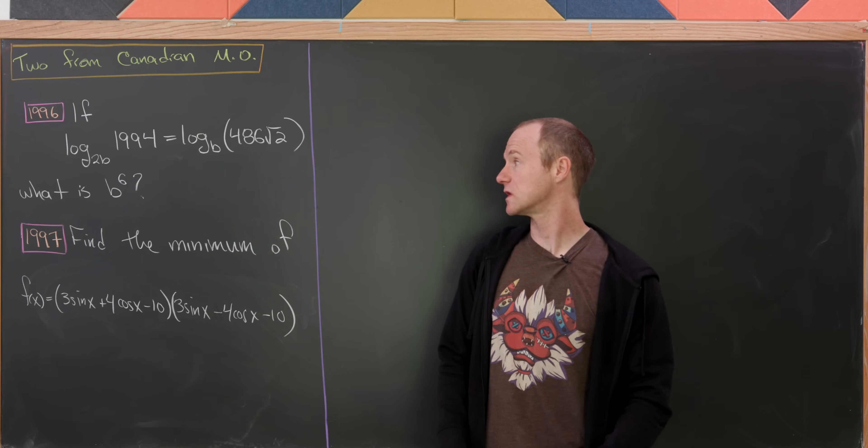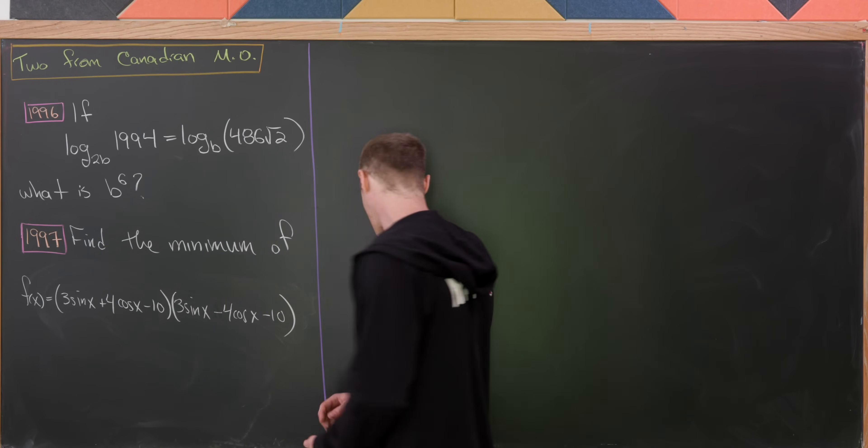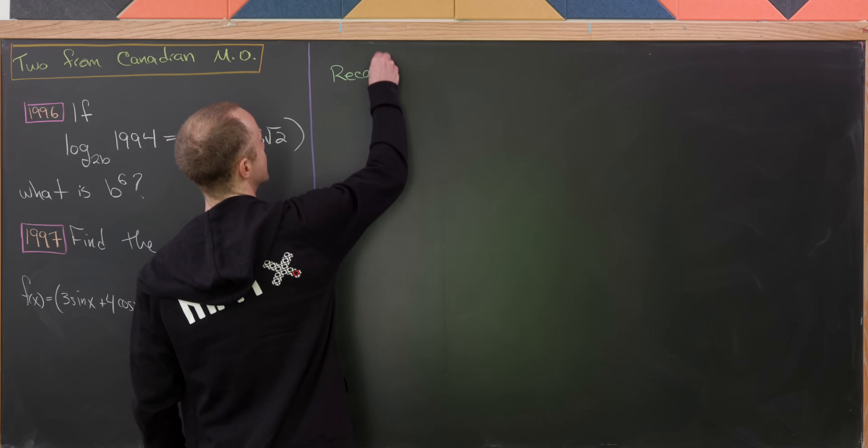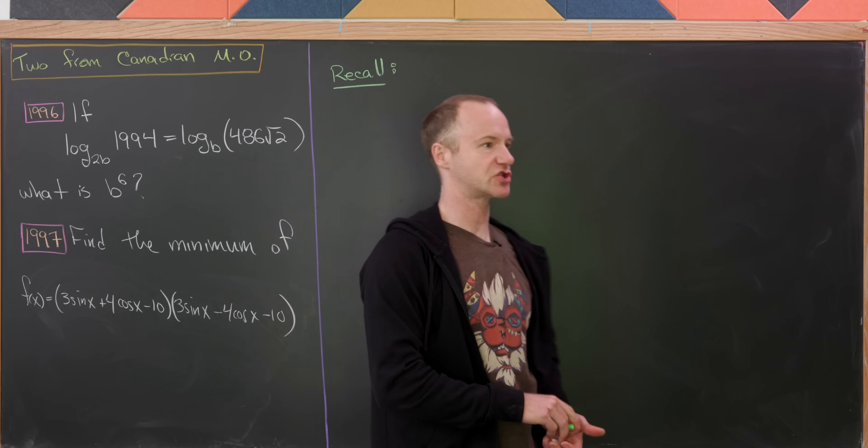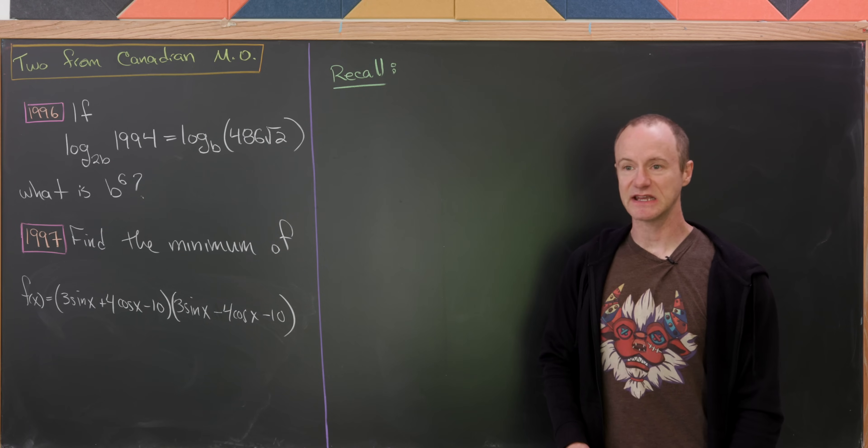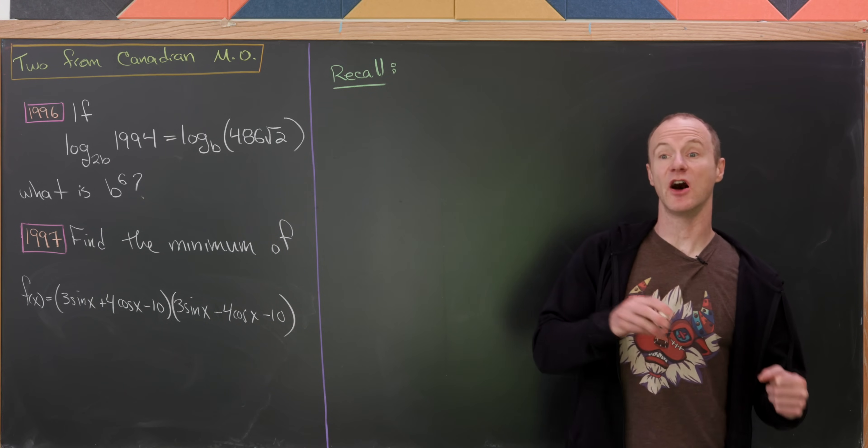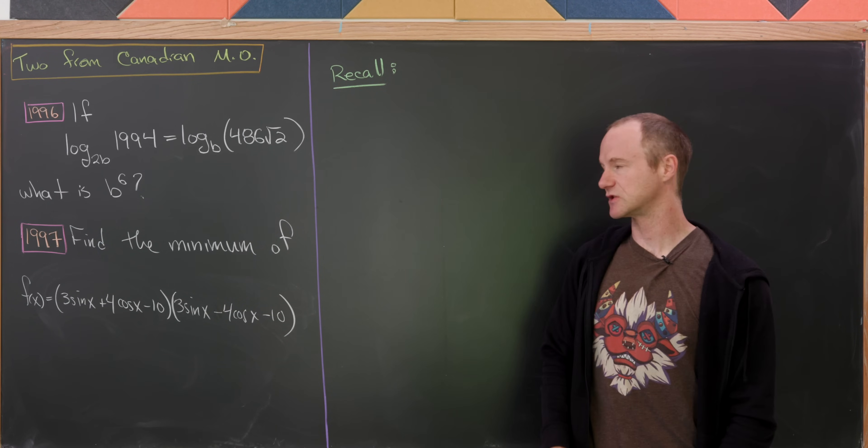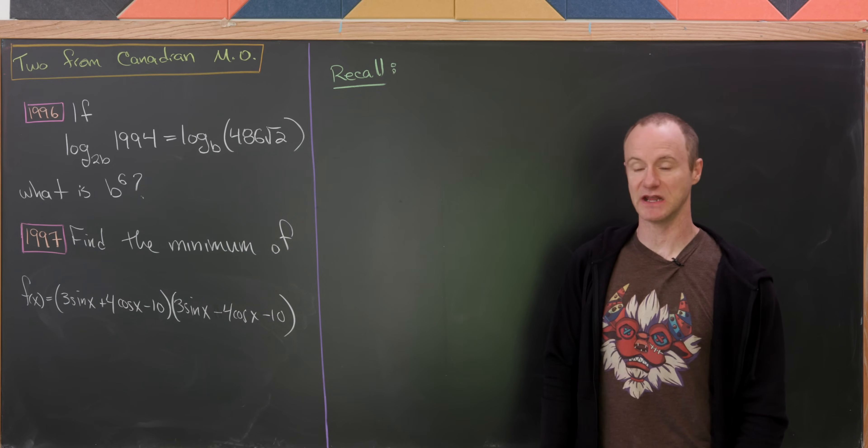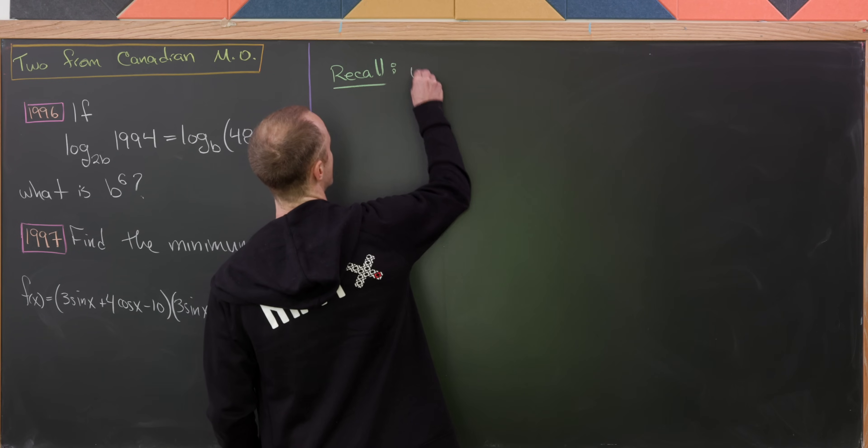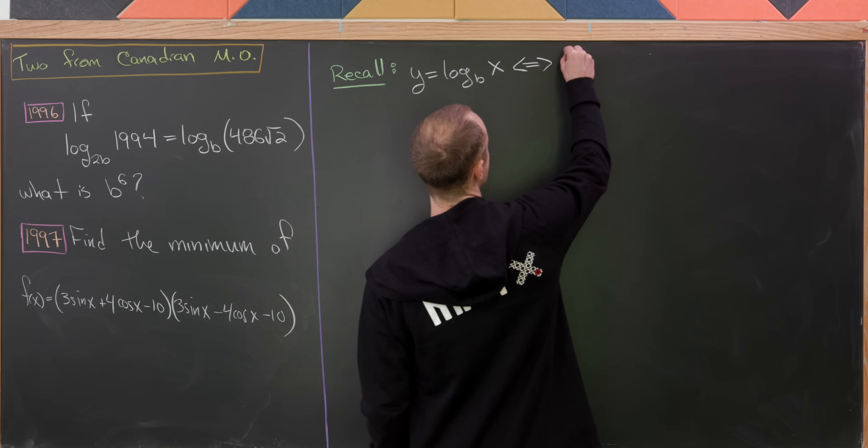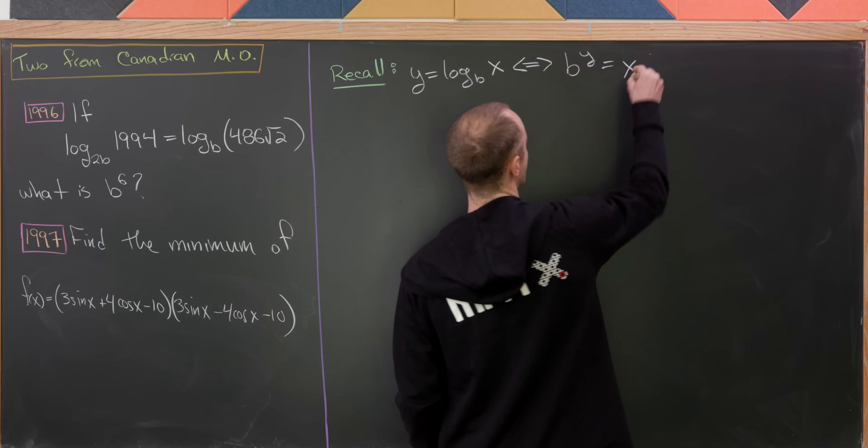And then our goal is to determine b to the sixth power. Let's recall how the logarithm is defined. Because often for inverse functions, including the logarithm, which is of course a classic example of an inverse function, it's easier to work in the non-inverse setting. So in this case, the non-inverse setting of the logarithm is exponential. We have y equals the log base b of x if and only if b to the y power is equal to x.